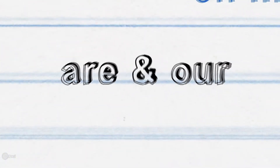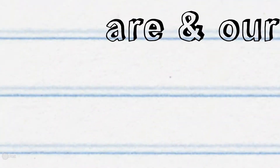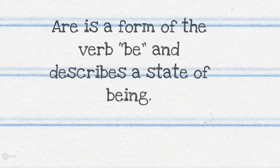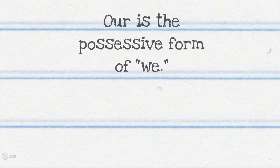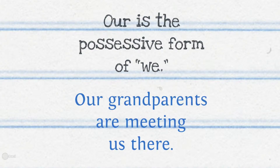Are and our. Are is a form of the verb 'be' and describes a state of being: 'We are driving to California next week.' Our is the possessive form of 'we': 'Our grandparents are meeting us there.'